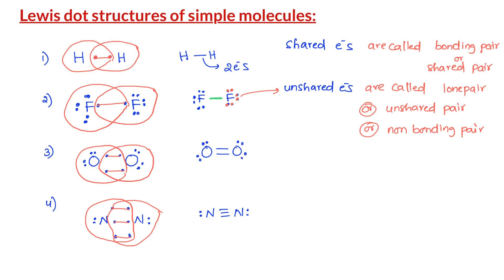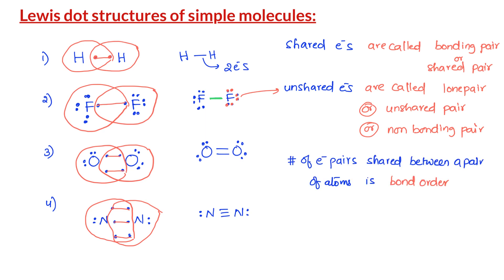The number of electron pairs shared between two atoms is called the bond order. For example, there is only one electron pair shared between the two hydrogen atoms, therefore the hydrogen molecule has a bond order of one. The O₂ molecule, in which there are two pairs of electrons shared between the two oxygen atoms, has a bond order of two. Similarly, the nitrogen molecule, in which there are three pairs of electrons shared between the two nitrogen atoms, has a bond order of three.